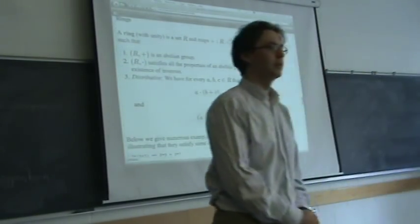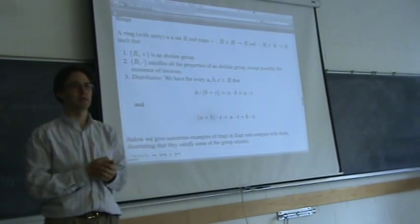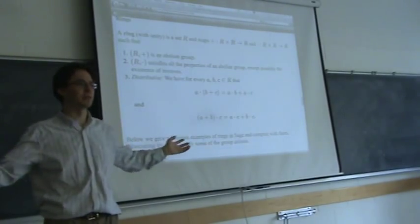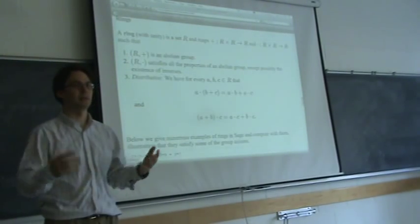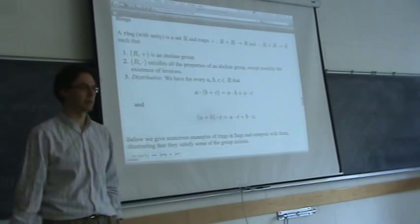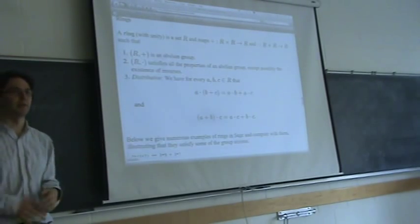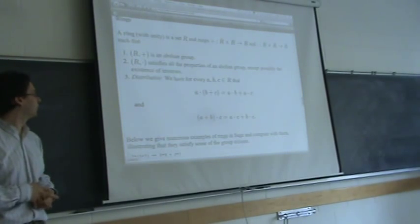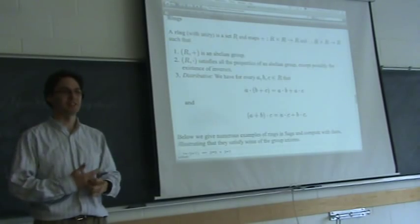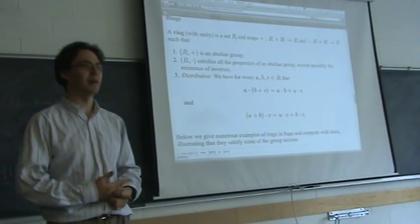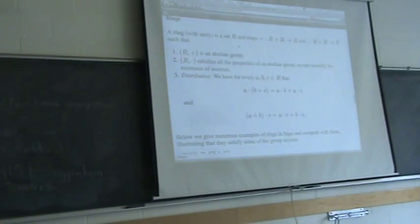Onto rings. A ring is kind of the next level up from a group. Groups come up in pure math all over the place and are very popular in applied math and chemistry — molecules have symmetries important to understand — and in physics. Groups are really important; you even read about them in Outside magazine. So they are all over the place.